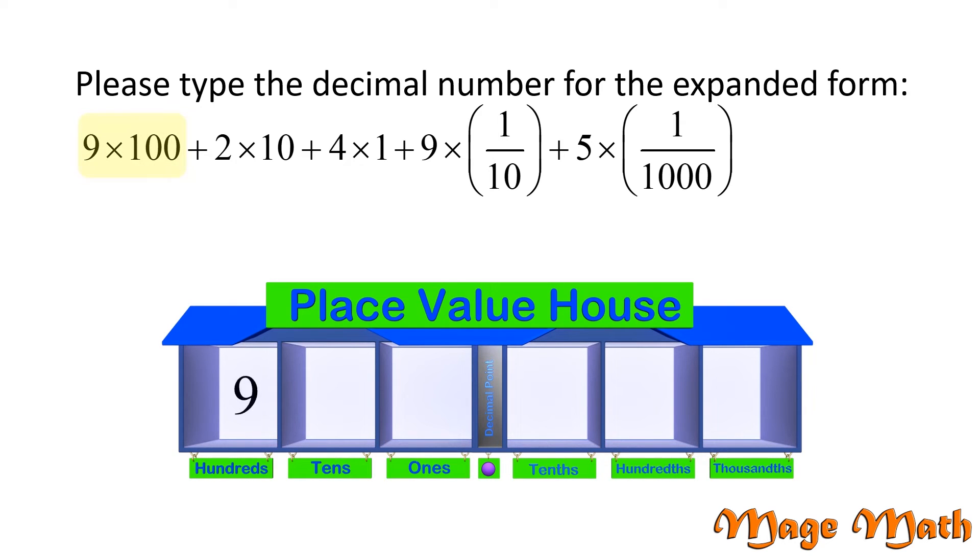Nine times one hundred means we have nine hundreds. Two times ten means we have two tens. Four times one means we have four ones. Nine times one-tenth means that we have nine tenths. And five times one-thousandth means we have five thousandths. Notice how we skipped the hundredths place value? We will write a zero as a placeholder. Our number is written as nine hundred twenty-four and nine hundred five thousandths. Nice work!